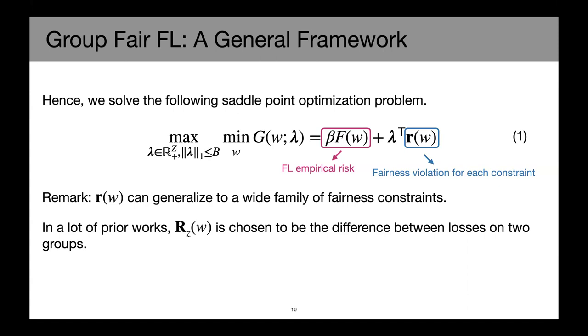So in a lot of the prior works, this R(w) is chosen to be the difference between losses on two groups or the difference between losses on two groups minus some small constant to approximate a setting such as demographic parity, equalized odds, or equal opportunity. However, as we've seen in the previous slide, this comes with compromised utility.